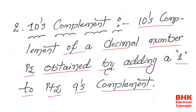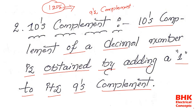For example, if you have the decimal number 125 and you want to find its tens complement, here is what we need to do. First we need to get the nines complement for the given decimal number. After getting the nines complement, we add plus one to it, and that result gives the tens complement of the decimal number.